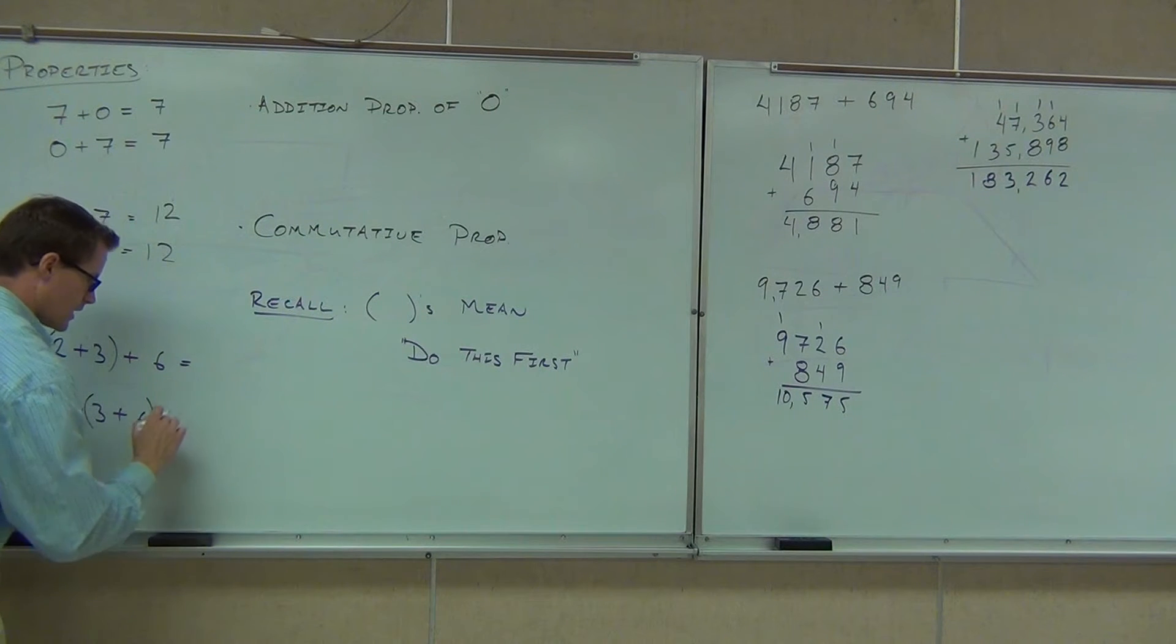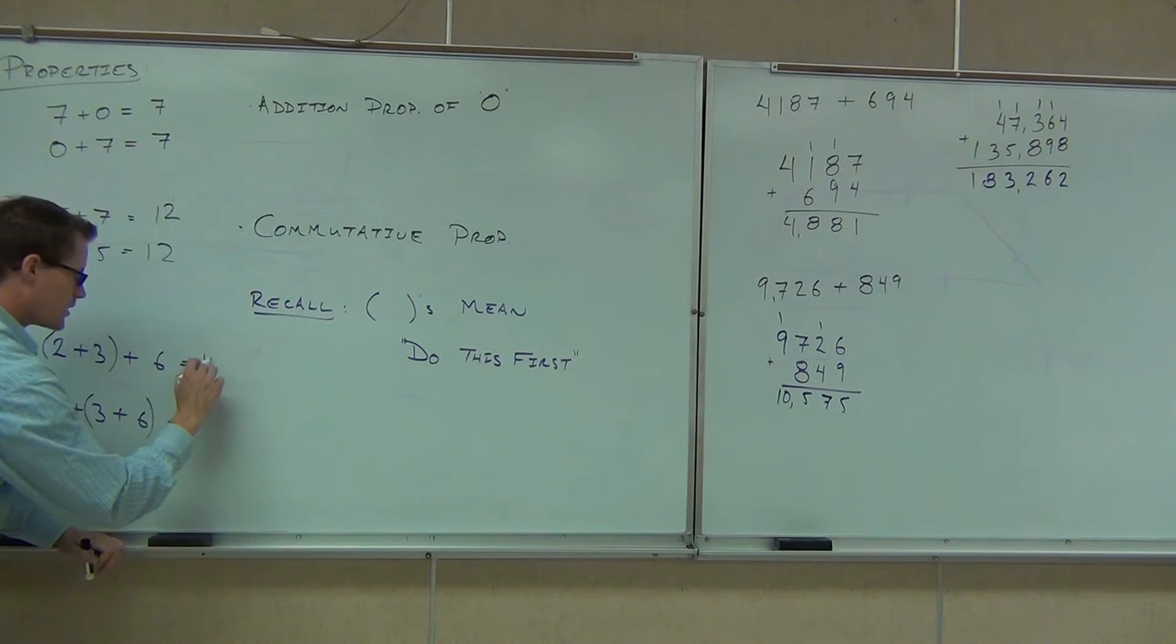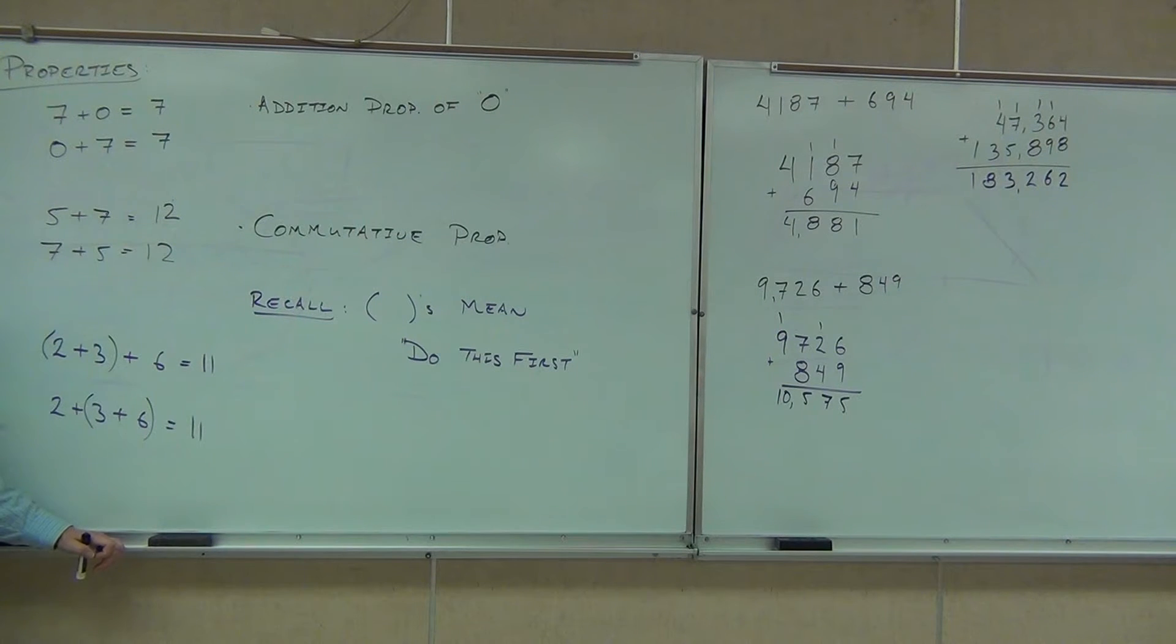This property right here is kind of a cool property of addition. It means I can group things differently or I can associate numbers differently. It's called the associative property. Associative means grouping. It means you can associate things. Either way, you're going to get 11 here. It's called the associative property.